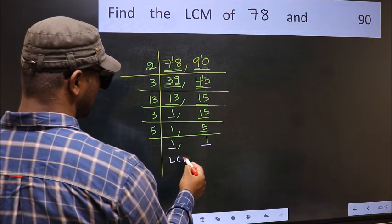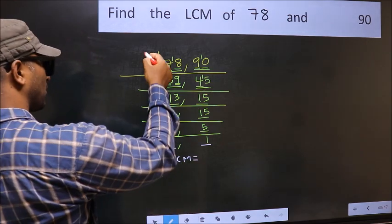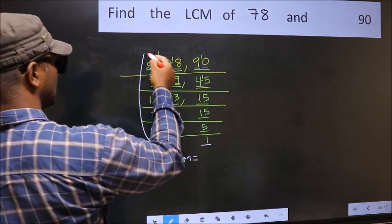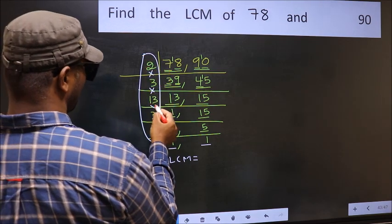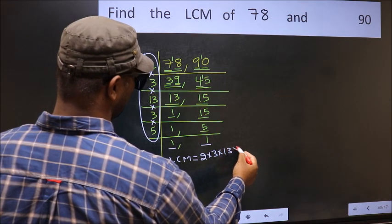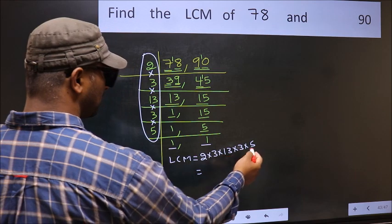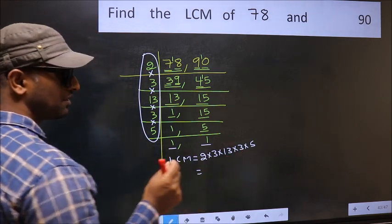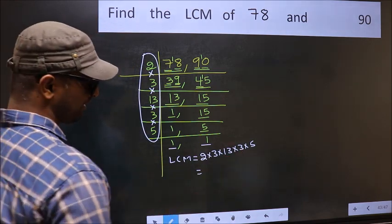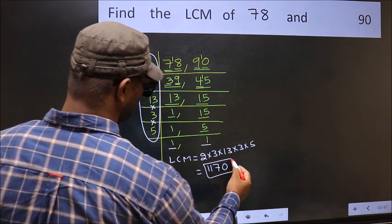So our LCM is the product of these numbers. That is 2×3×13×3×5. When we multiply these numbers, we get 1170 as our LCM.